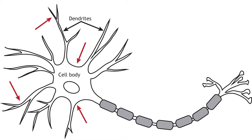Ionotropic receptors, also called neurotransmitter-gated or ligand-gated channels, are ion channels that open in response to the binding of a neurotransmitter. They are primarily located along the dendrites or cell body, but they can be present anywhere along the neuron if there is a synapse. Ligand-gated channels are important for receiving incoming information from other neurons.